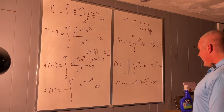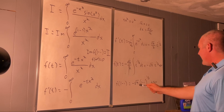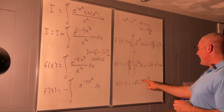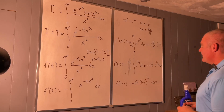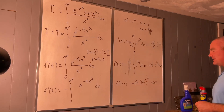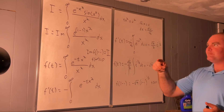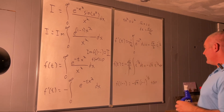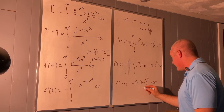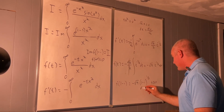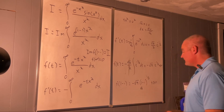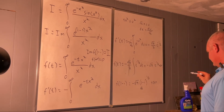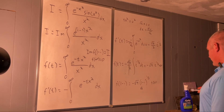Now we need to take the imaginary part, but before that we'll put this into exponential form. What would (1 minus i) be in exponential form? The magnitude is square root of two, and we went over one and down one, giving us square root of two times e to the negative i pi over four.